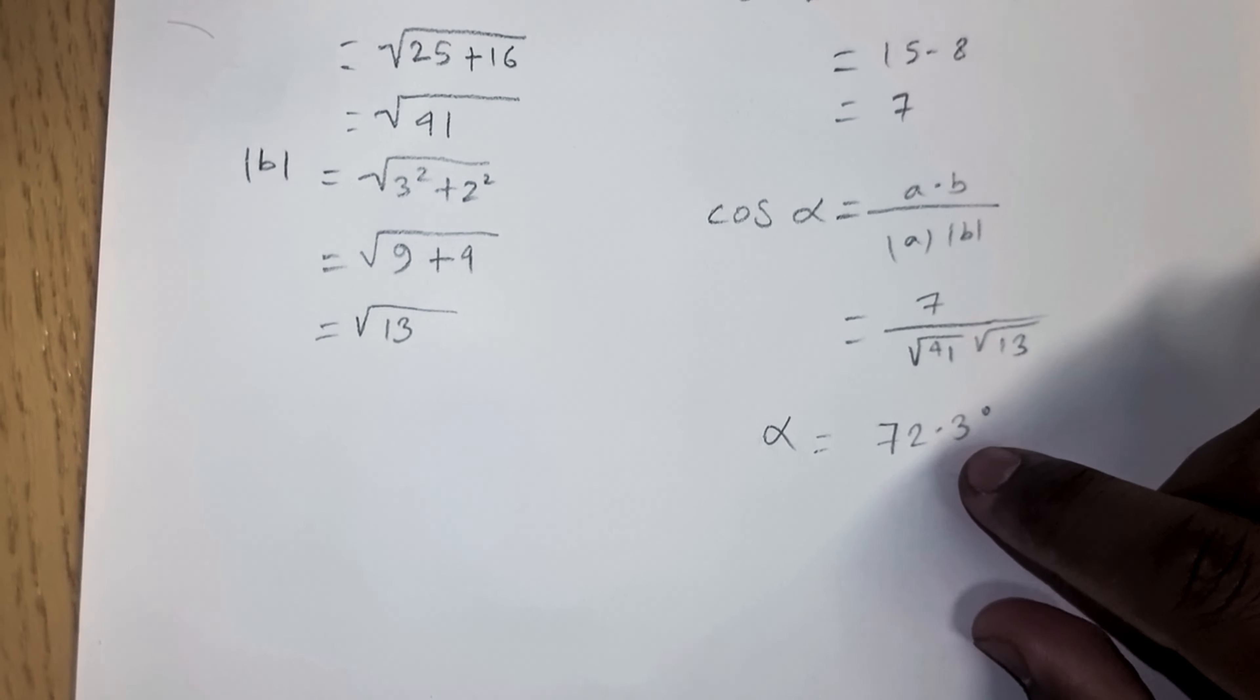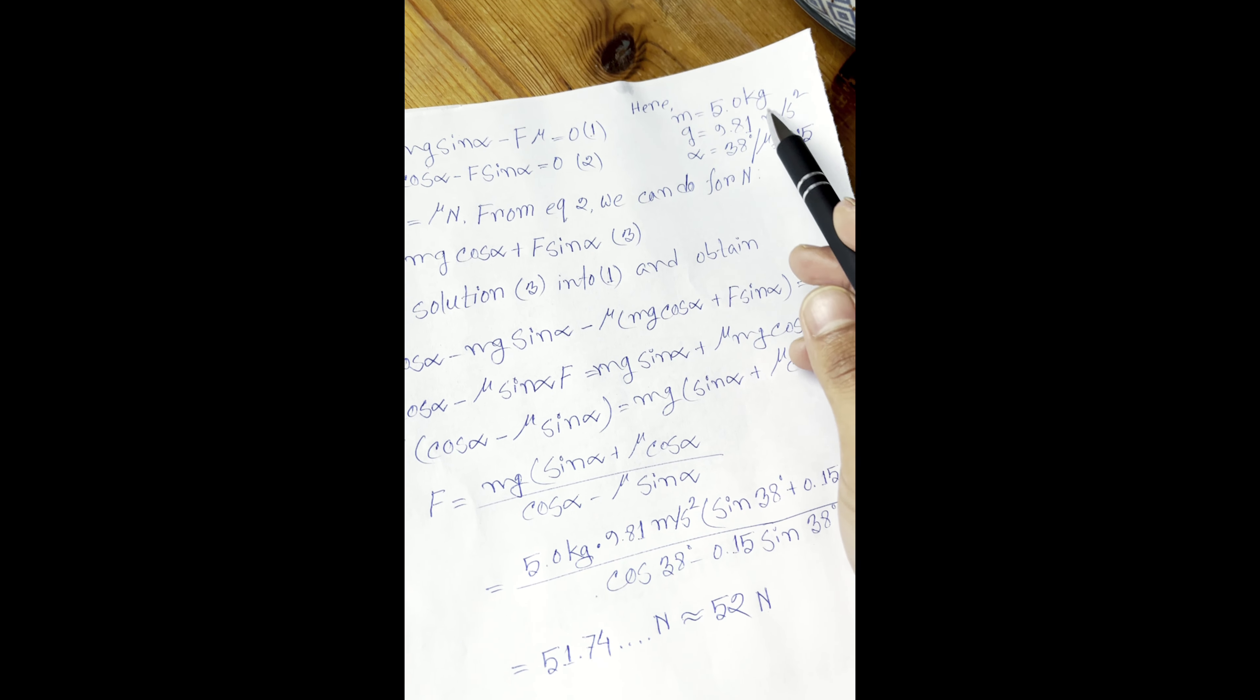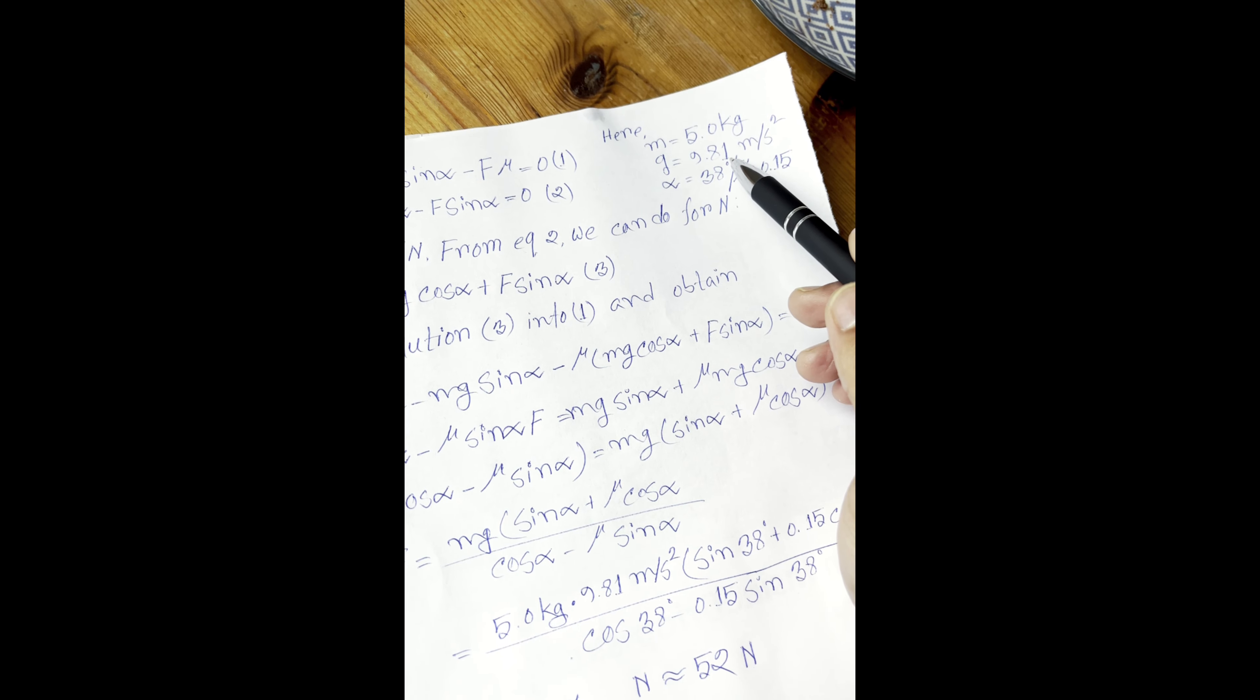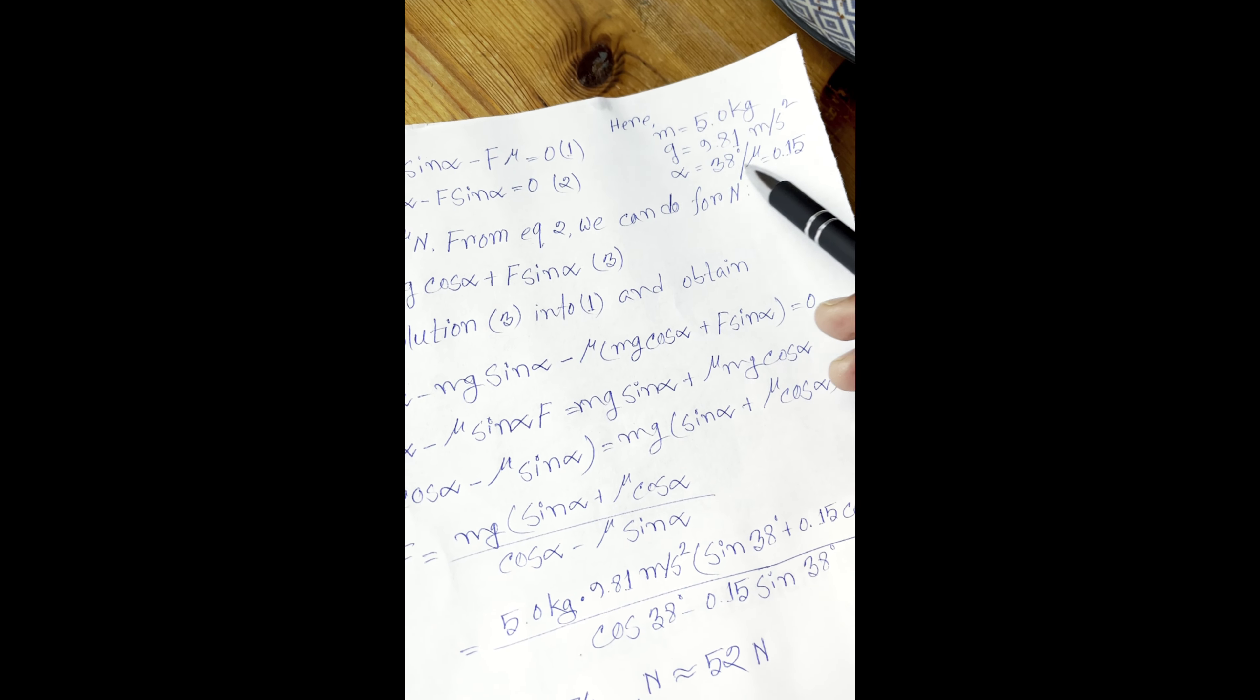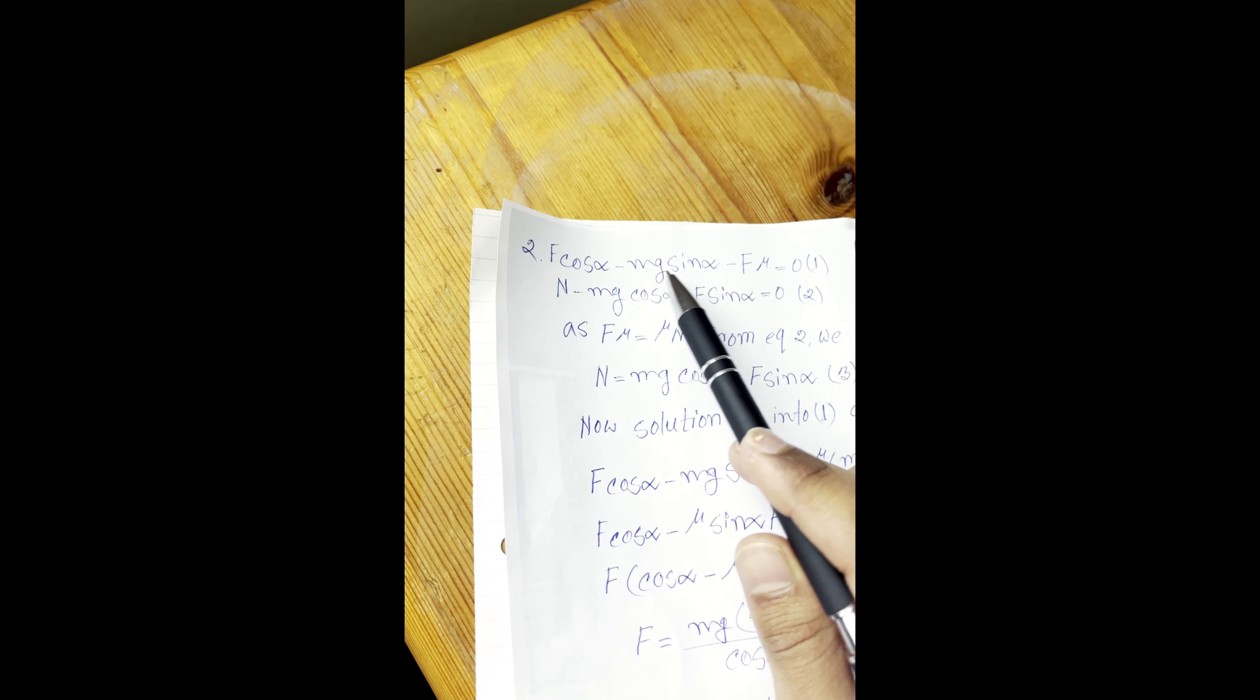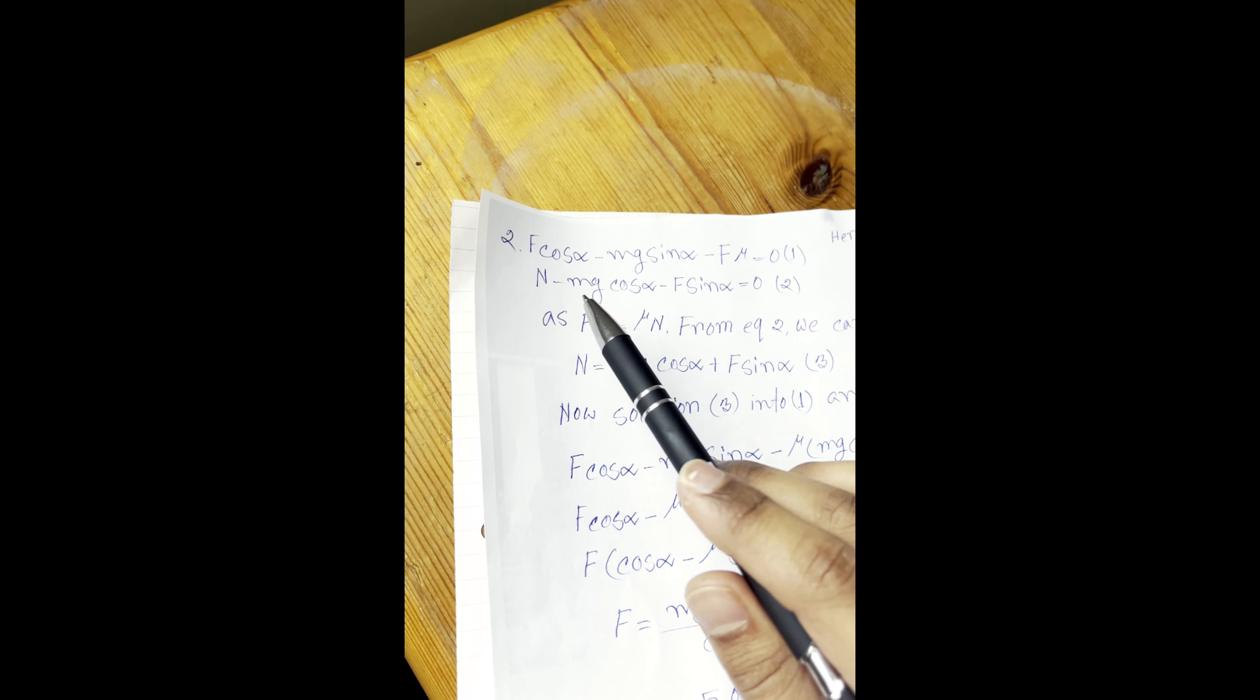Here we take the values from the question: m equal to 5 kg, g equal to 9.81 m/s², and mu is 0.15. The equation is F cos θ minus mg sin θ minus F mu equal to 0, and N equal to this.